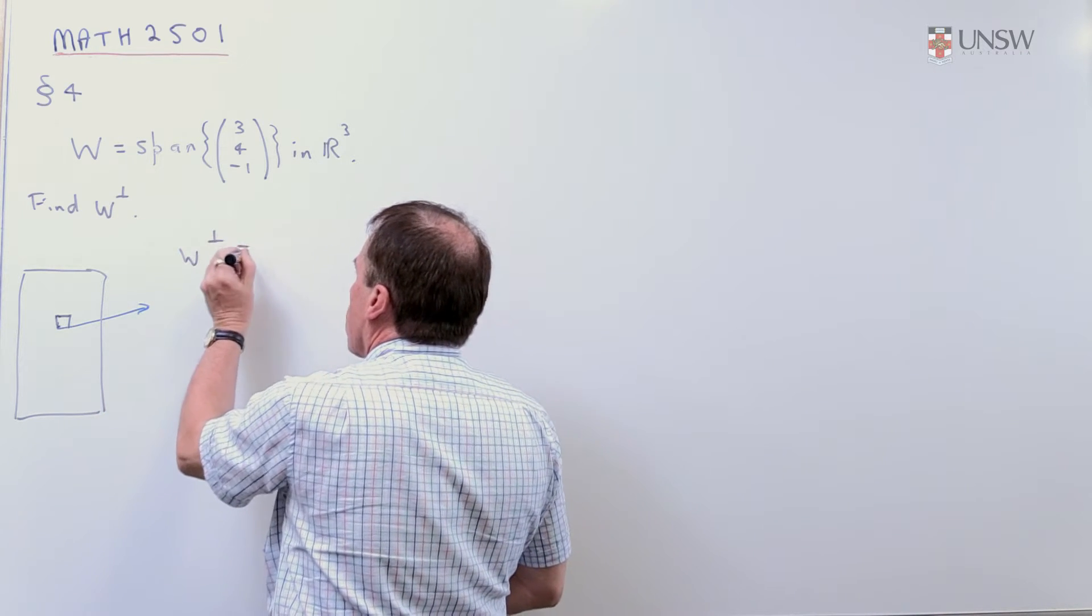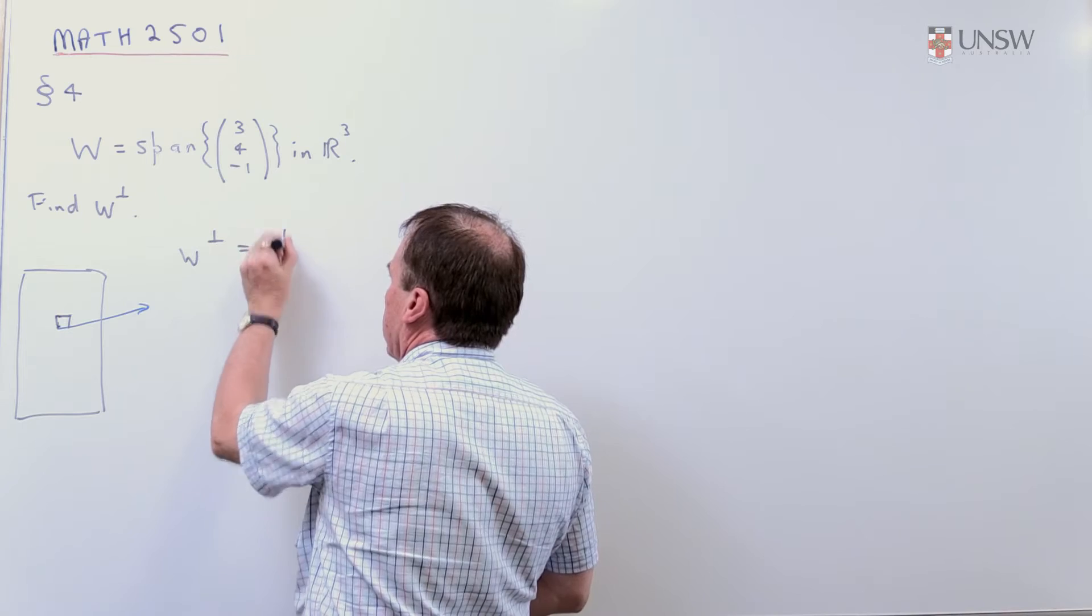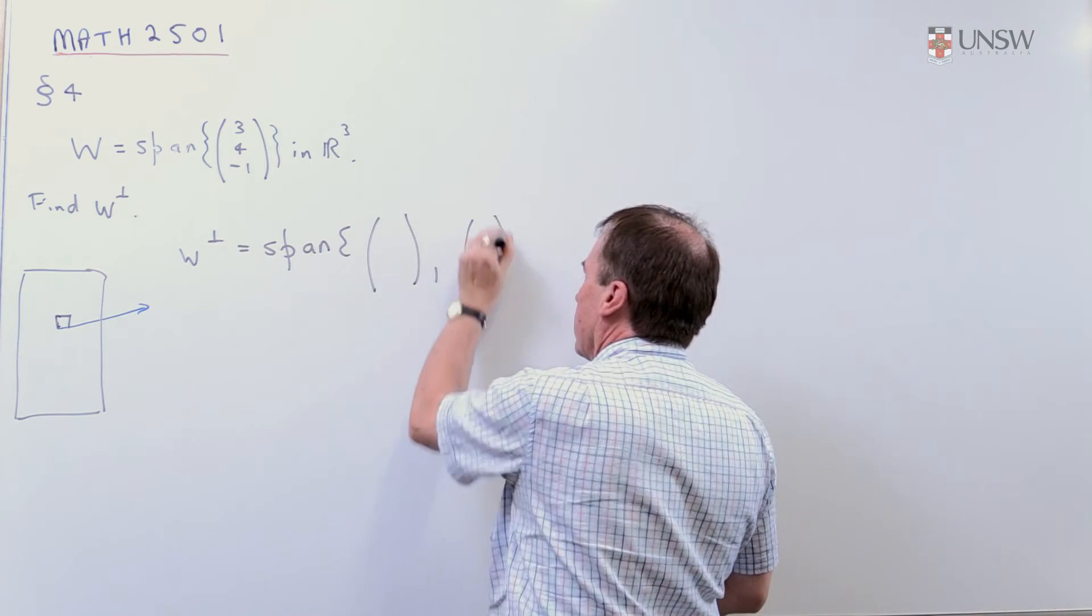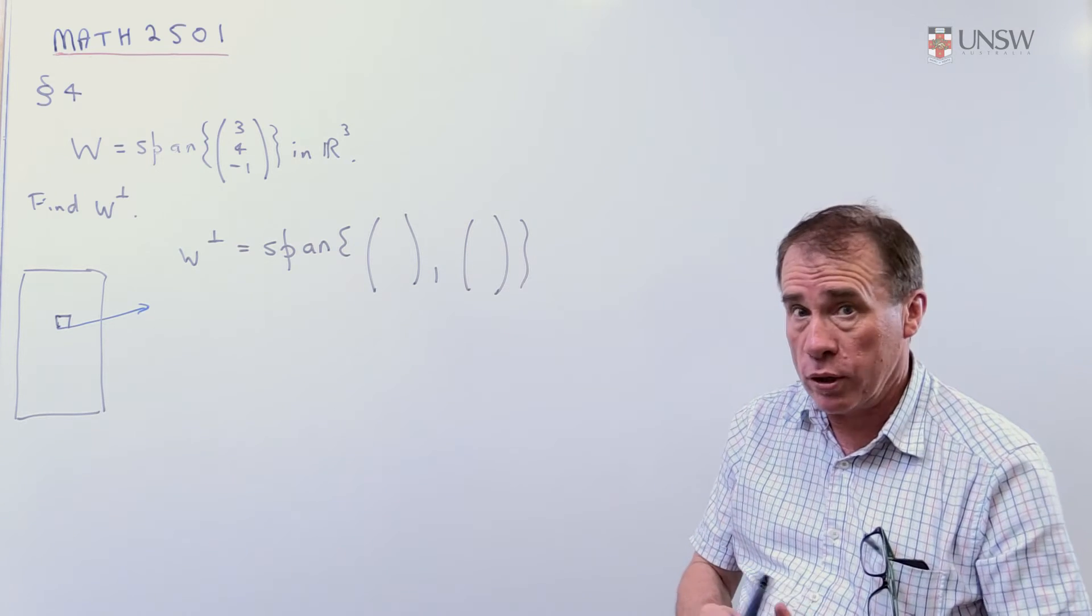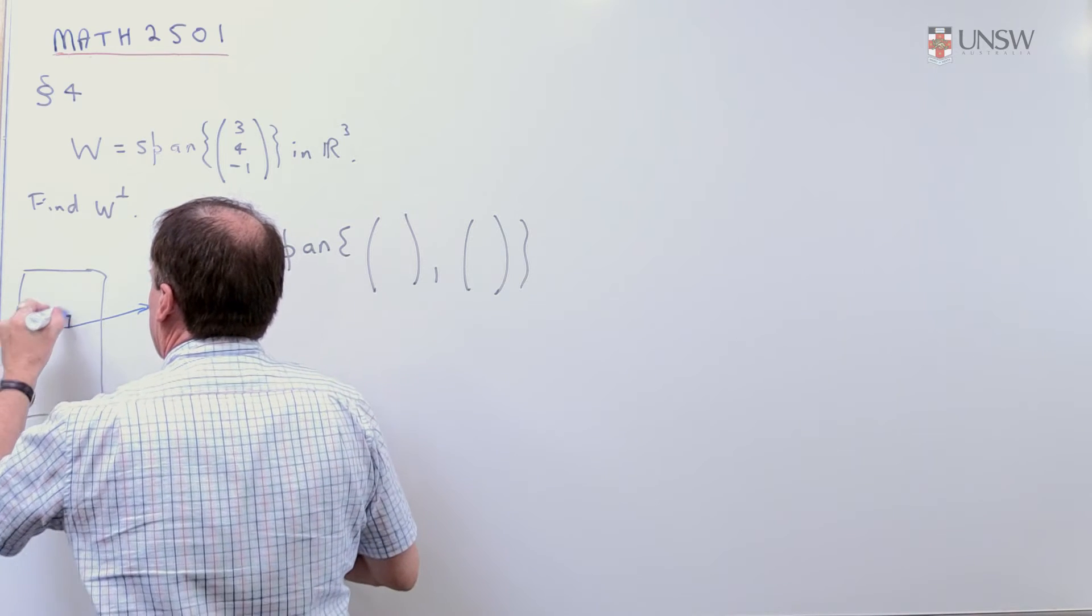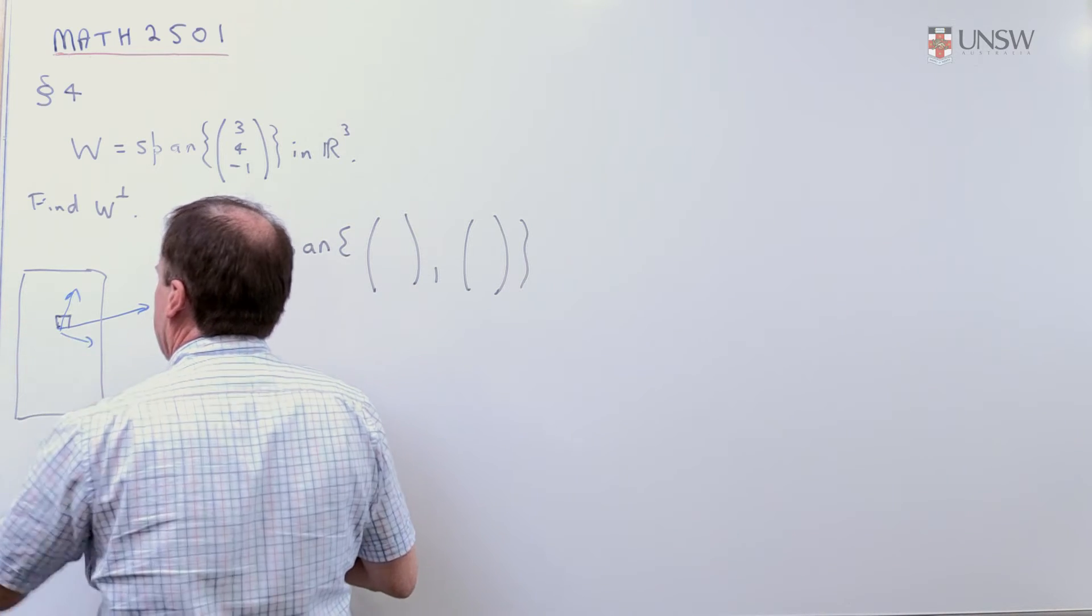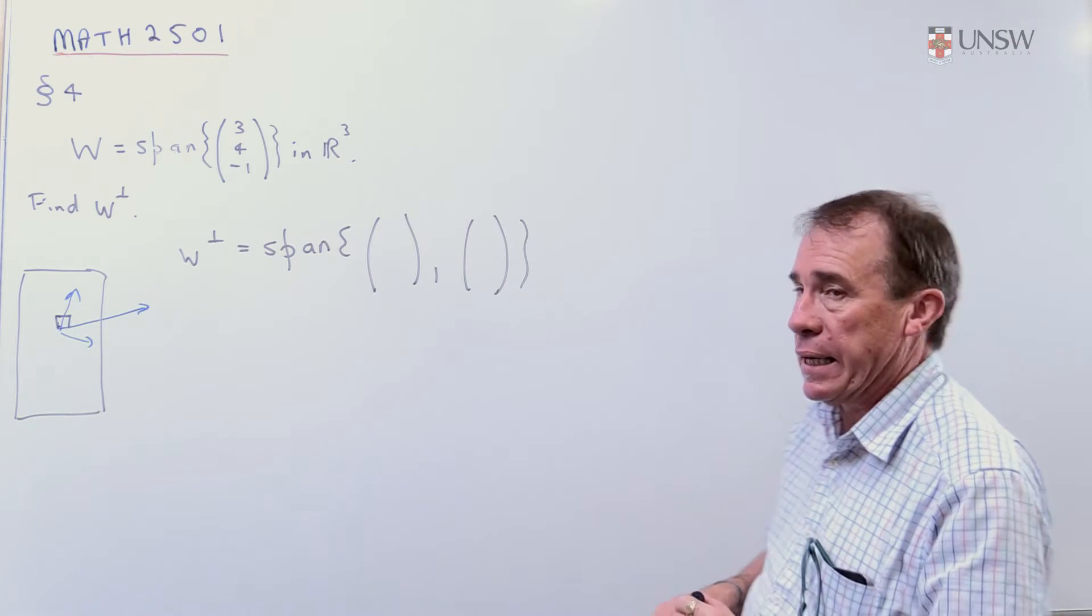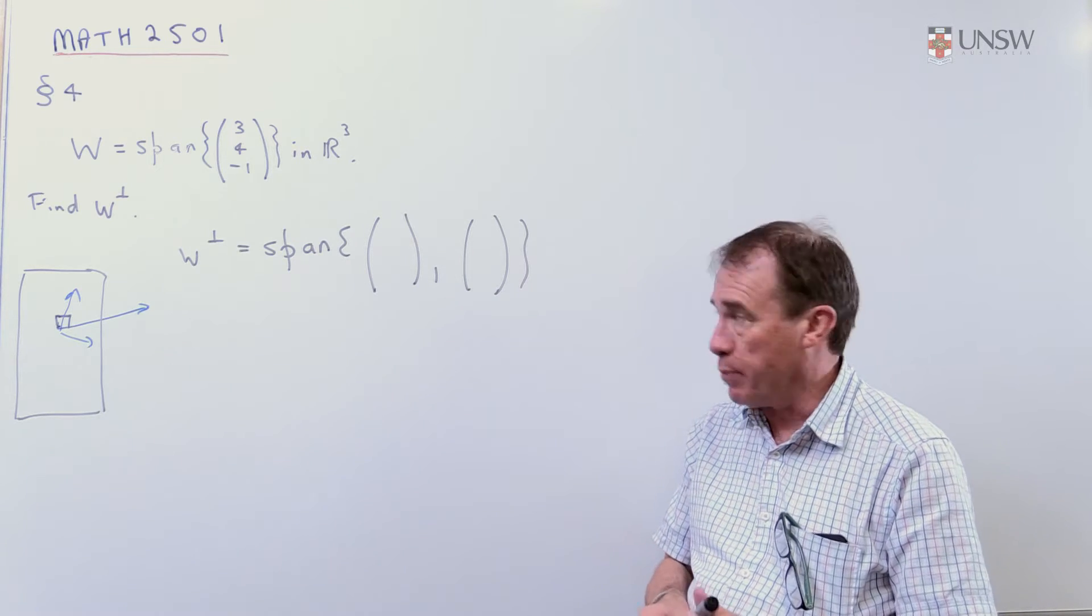To answer this question, W perp, I can just write down the answer without doing very much work at all. Because all I really want now, I want two vectors that lie on this plane. Any two vectors I like lying on that plane as long as they are linearly independent, as long as they're not multiples of each other.